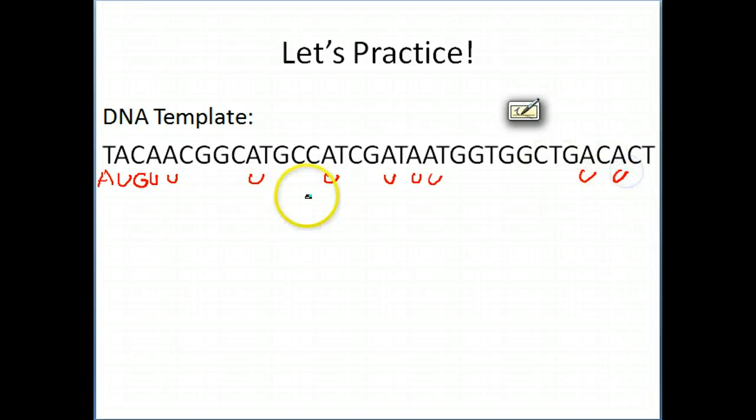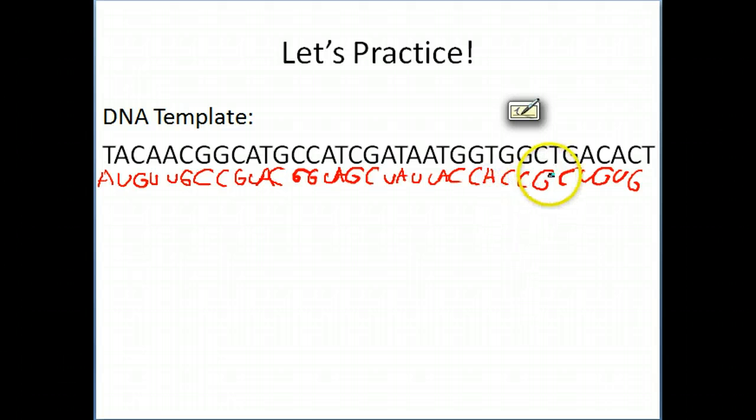You can still do this and still get a correct messenger RNA transcript. Let me show you a little trick to do that. You just handle each nucleotide independently. So for example, for the A's, you go through and you find all the A's and you put U's. There's nothing wrong with doing that. You can go through and do each letter first. This way you don't get kind of caught up. For each C, you would put a G. For each G, you'd put a C. And then for each T, you would put an A.